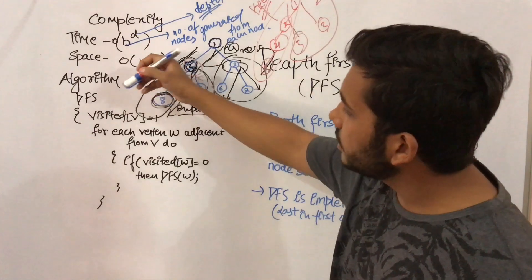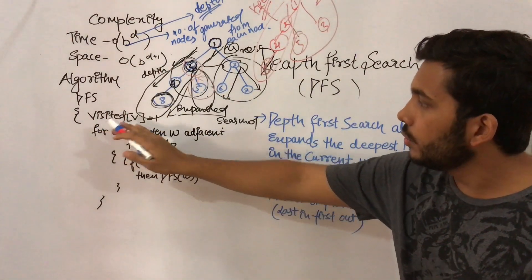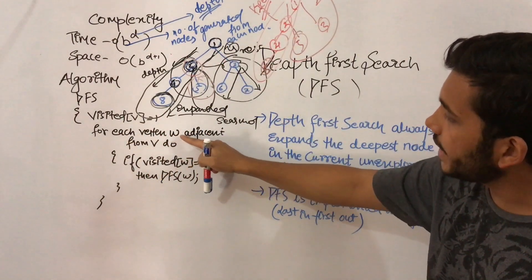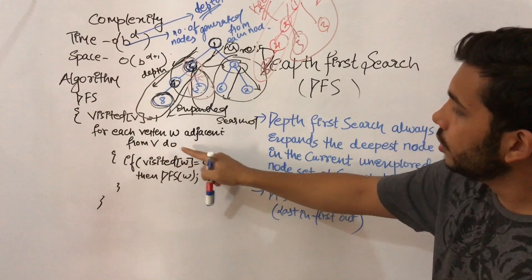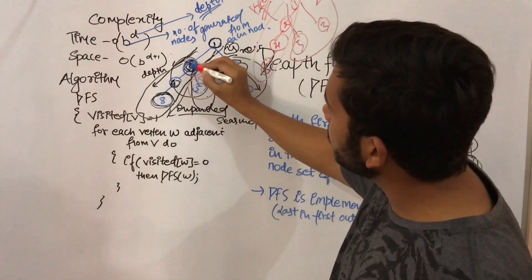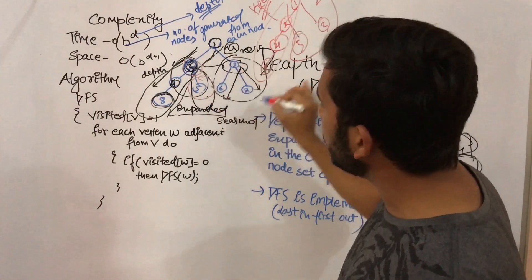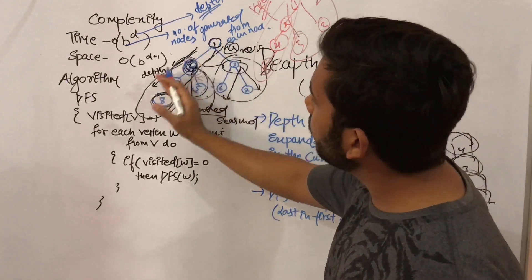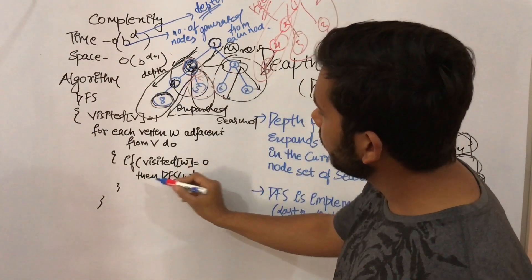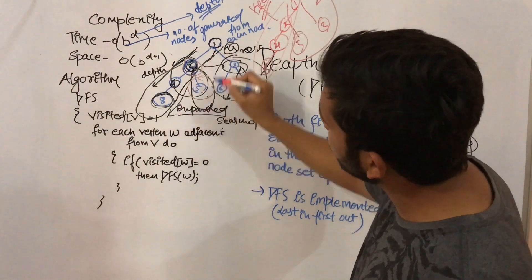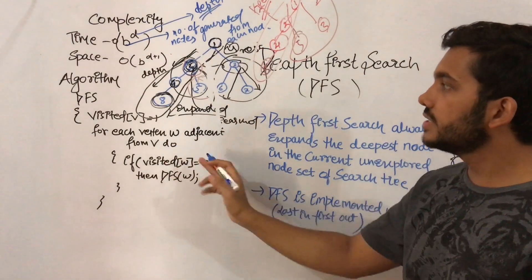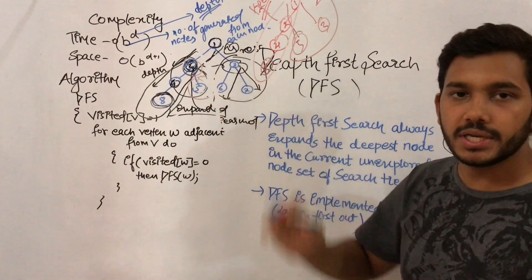The DFS algorithm starts by visiting a node — suppose the visited node is 1. Then for each vertex W adjacent to V, if visited W equals 0, meaning you have not yet visited that node, you call DFS of W recursively. So if you are at node 2, its adjacent nodes such as node 3 are processed until all nodes have been explored.